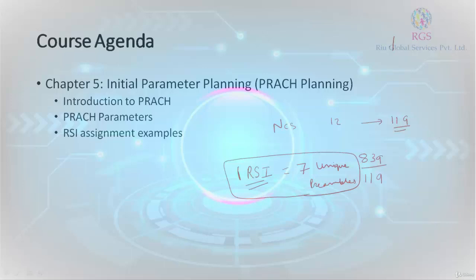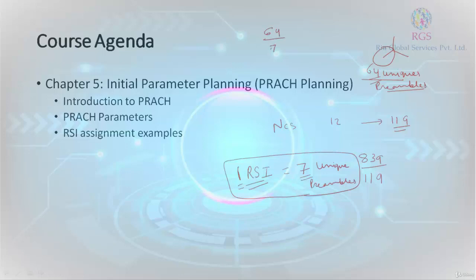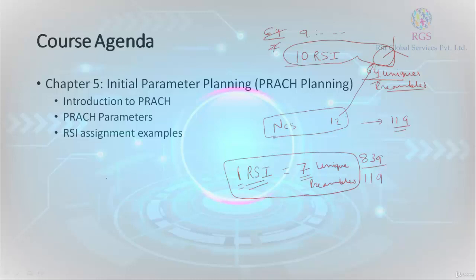If you remember, I told you earlier that every cell requires 64 unique preambles. Now, one root sequence is generating 7 unique preambles. In order to generate 64 unique preambles, how many root sequence indexes are needed? 64 divided by 7 is 9 point something, which means 10 RSIs are required to plan this particular cell when NCS value is 12. So if I am starting from index 0, I will plan 0 to 10 for this cell.